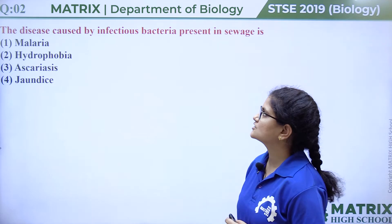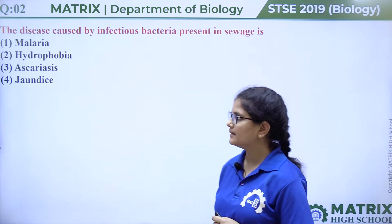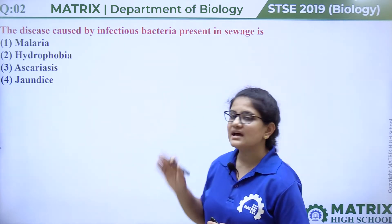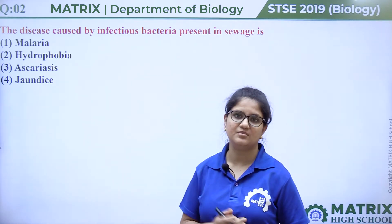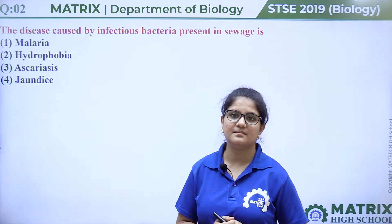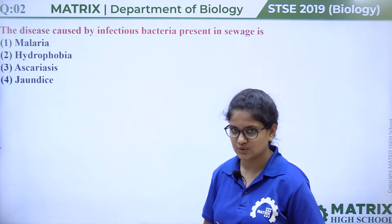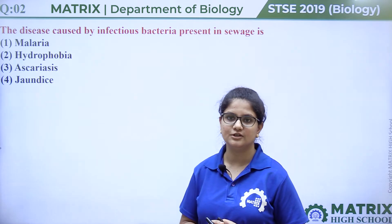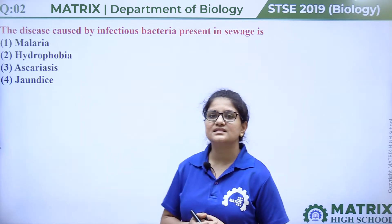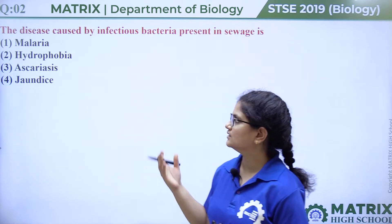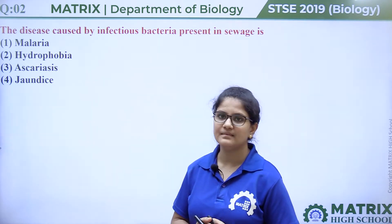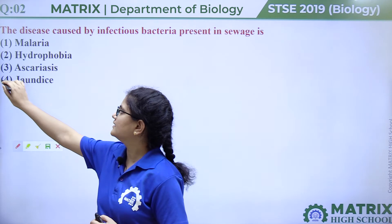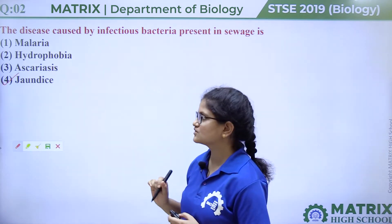Question number two: the disease caused by infectious bacteria present in sewage is malaria, hydrophobia, ascariasis, or jaundice. Malaria is caused by a protozoan named Plasmodium, spread by the female Anopheles mosquito. Hydrophobia is also known as rabies, spread by dog bite. Ascariasis is caused by a worm, Ascaris. Jaundice is caused by contaminated water. So the answer is option four, jaundice.